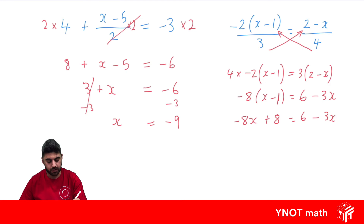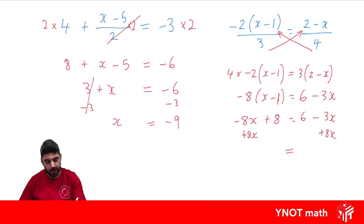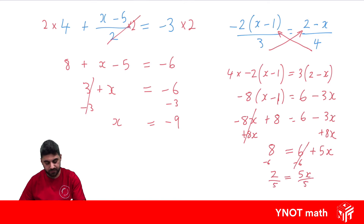We have pronumerals on both sides, so take the smaller one to the bigger one. Out of minus 8x and minus 3x, minus 8x is smaller, so we add 8x to both sides. Minus 8x plus 8x cancels, leaving 8. On the right: minus 3x plus 8x is plus 5x, so we have 8 equals 6 plus 5x. Subtracting 6: 8 minus 6 is 2, equaling 5x. Dividing both sides by 5 gives x equals 2 over 5.